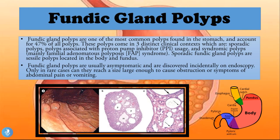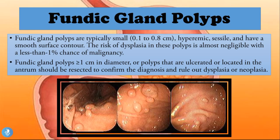Fundic gland polyps are typically small, measuring 0.1 to 0.8 centimeters. They are hyperemic and sessile with a smooth surface contour. The risk of dysplasia in these polyps is almost negligible, with less than one percent chance of malignancy — so even though they are the most commonly found polyps, they are essentially benign.